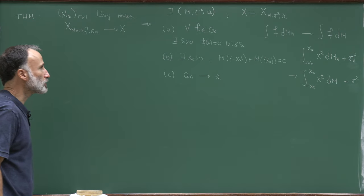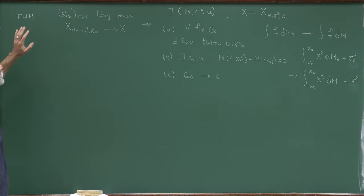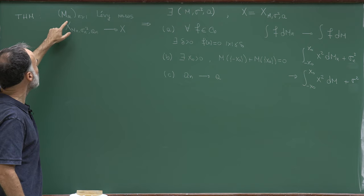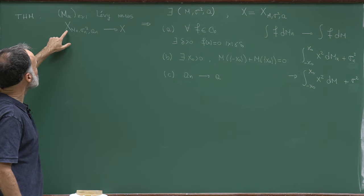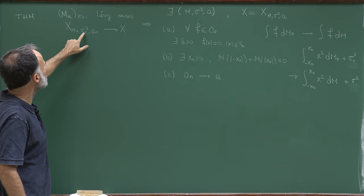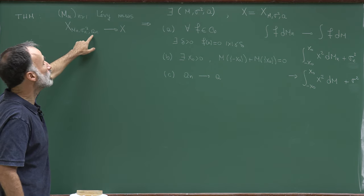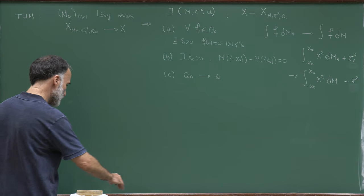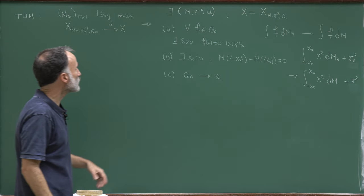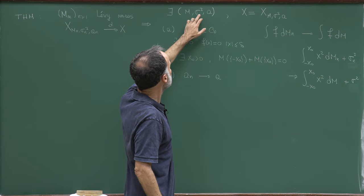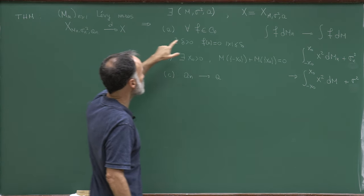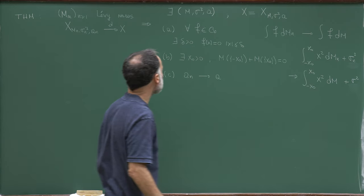This is the second part of the lecture and here is the theorem which we will prove. We have a sequence of Lévy measures Mn, a sequence of random variables whose distribution is associated to this Lévy measure, a non-negative number σn² and a real number An, and I'm assuming that this sequence is converging in distribution to some random variable x. What we want to prove is that there exists a Lévy measure M, a non-negative real number σ², and a real number A such that the distribution of x is actually the distribution associated to this triple.